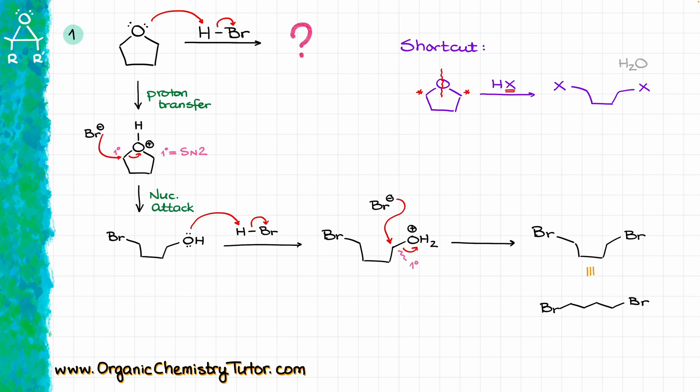As a shortcut: whenever you have a cyclic ether, we break the molecule at the position where the oxygen is, and each carbon that was connected to the oxygen now gets attached to X in the final product. The co-product in this reaction is a water molecule, but we don't really care about that, so most of the time you won't even write it out.